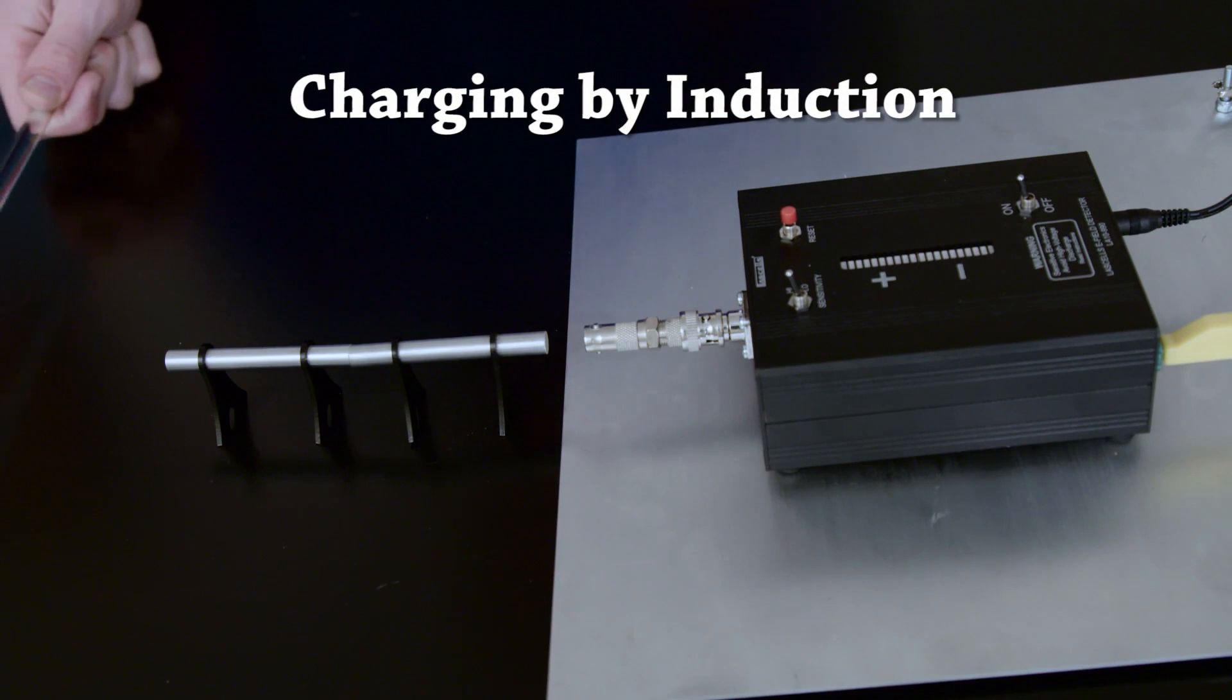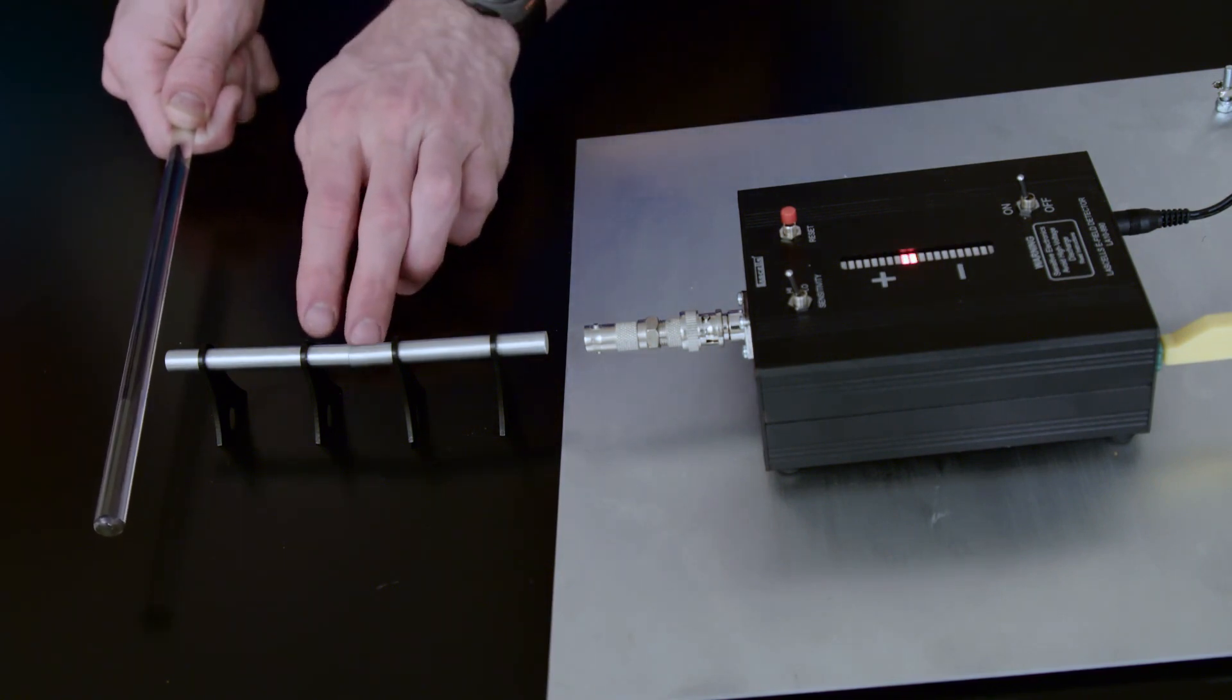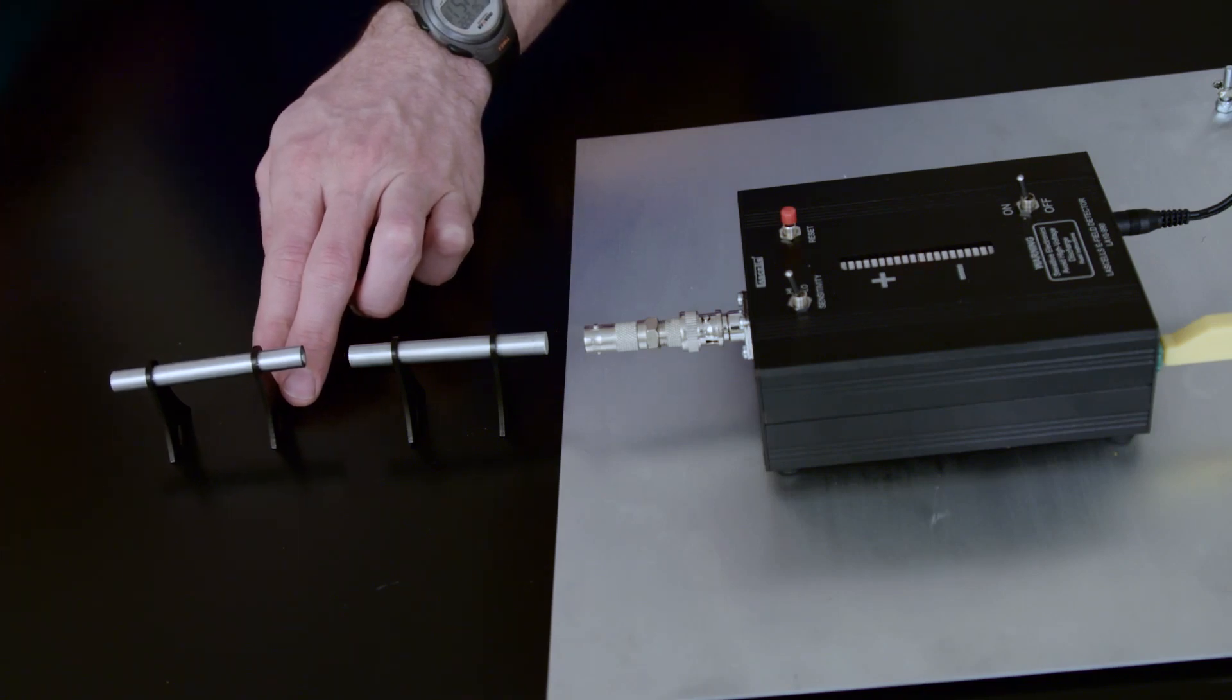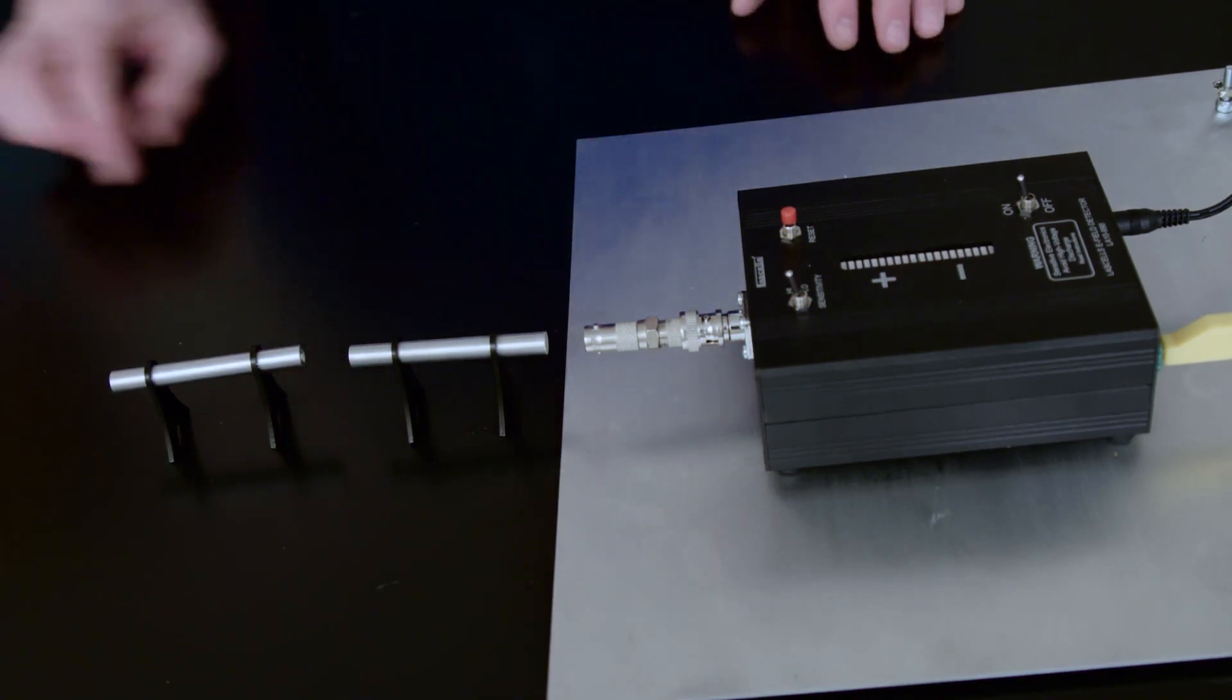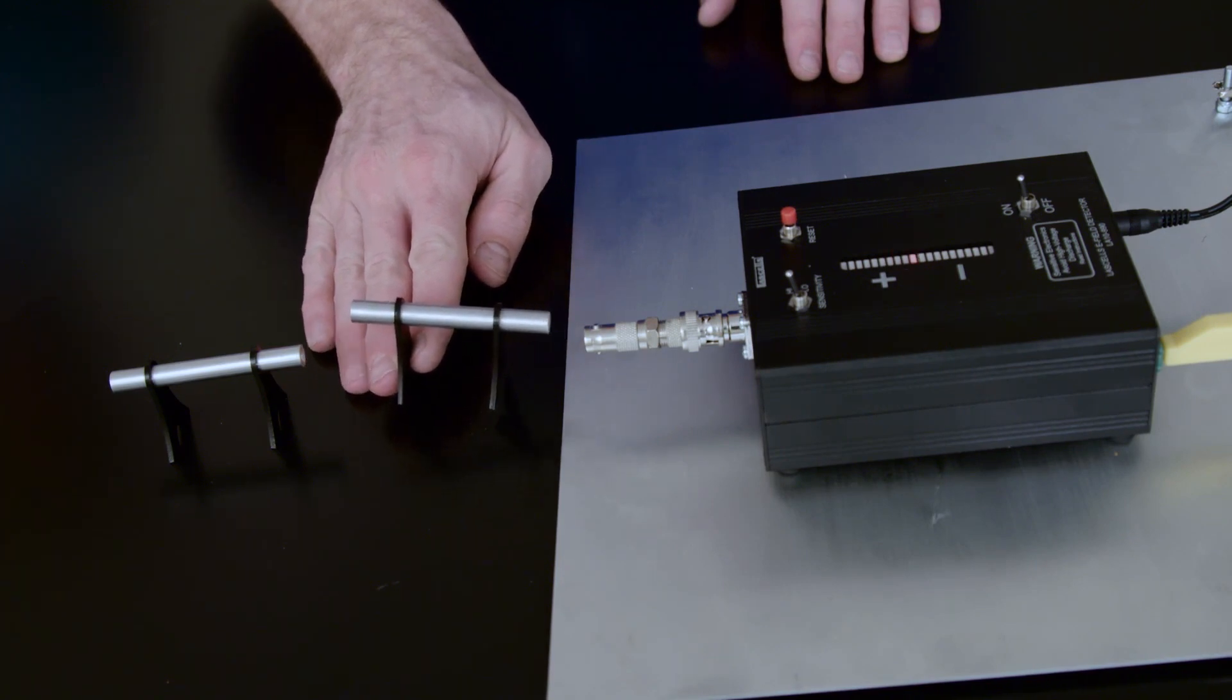One of the best experiments is charging by induction. Here these neutral metal rods are polarized by the external charge. When it is removed, one is clearly positive and the other negative.